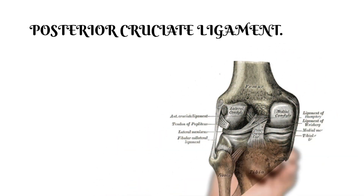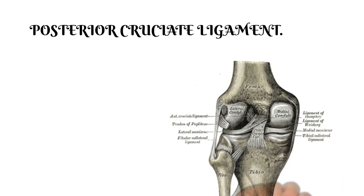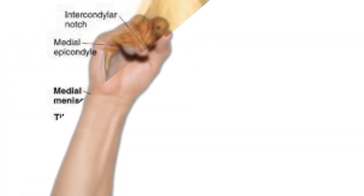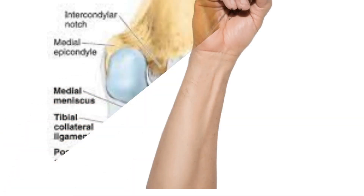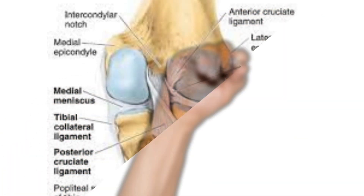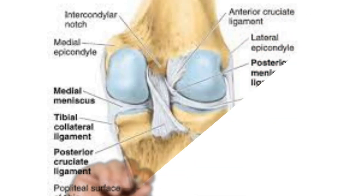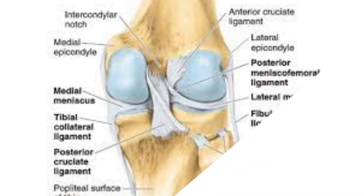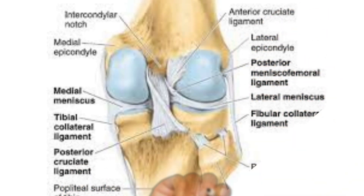The PCL has a strength of 2500 to 3000 newtons against a posterior directed force. Regarding the bundles of the PCL, we can remember it as PAL: the PCL has an anterolateral bundle and a posteromedial bundle. The anterolateral bundle is tight in flexion with most reported stability at 90 degrees of flexion, while the posteromedial bundle is tight in extension.